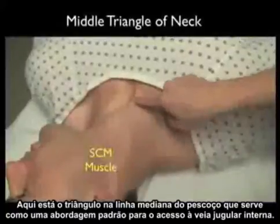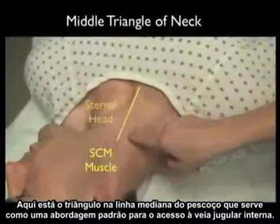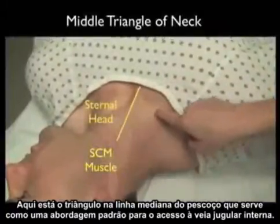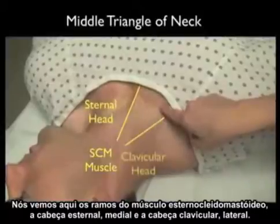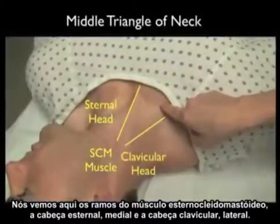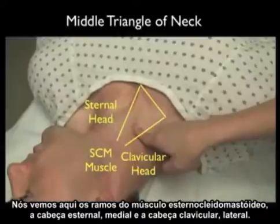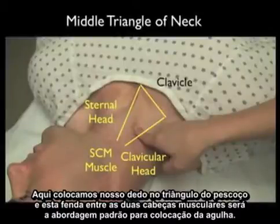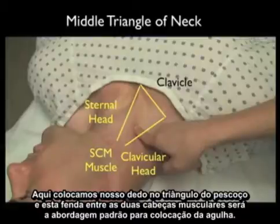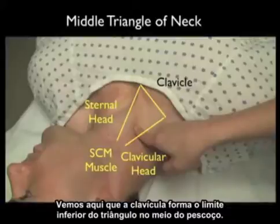Here's the middle triangle of the neck that serves as the standard approach for cannulation of the internal jugular vein. We see here the branches of the sternomastoid muscle — the sternal head medially and the clavicular head laterally. Here we're putting our finger into the triangle of the neck, and this indentation between the muscle heads would be the standard approach for placement of the needle. The clavicle forms the inferior boundary of the middle triangle of the neck.